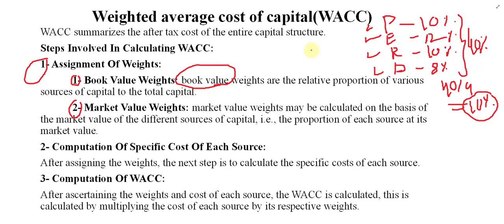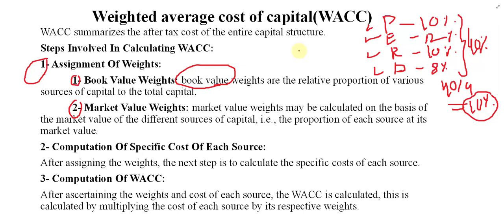For example, you purchase a machine for 10,000 and record it in the books — so book value is 10,000. Right now the market value may also be 10,000, but after some time the market price may be more or less than 10,000. Whatever you purchase at the beginning and record in the book is called book value.